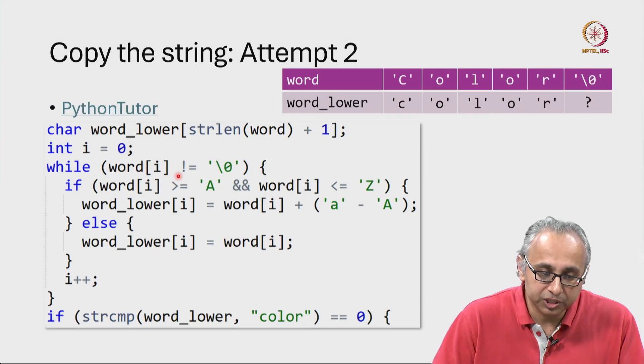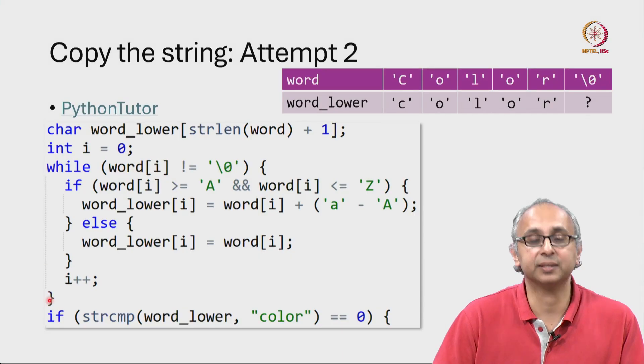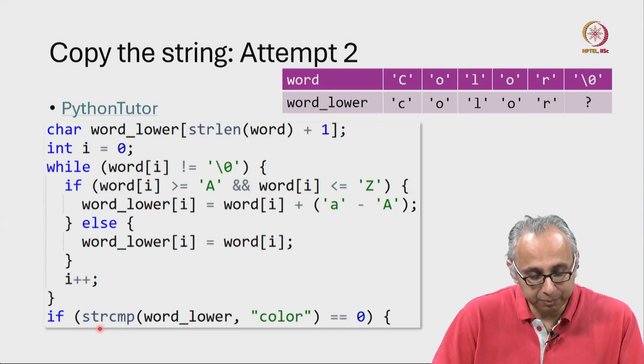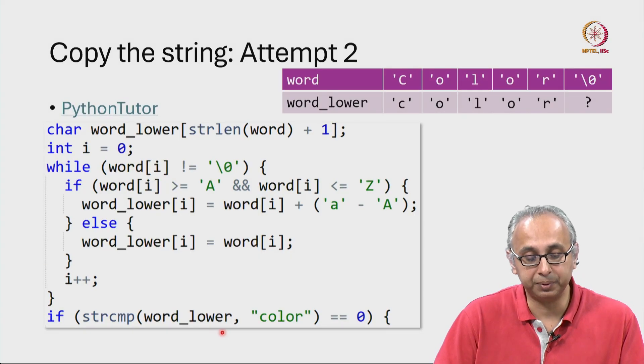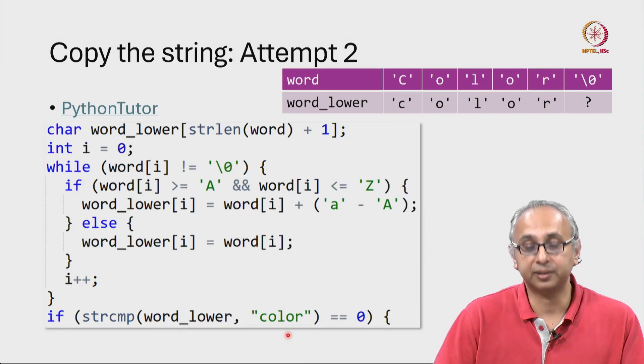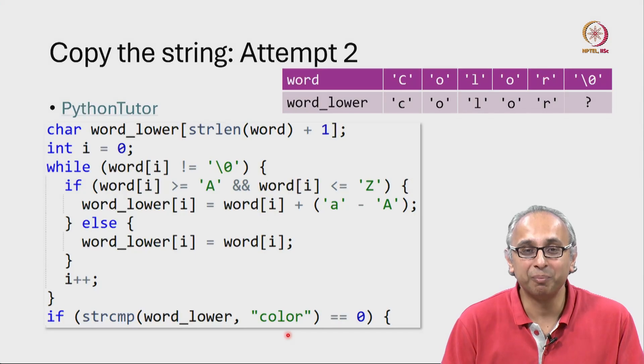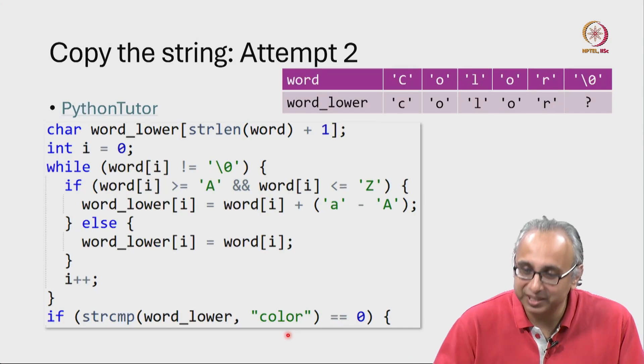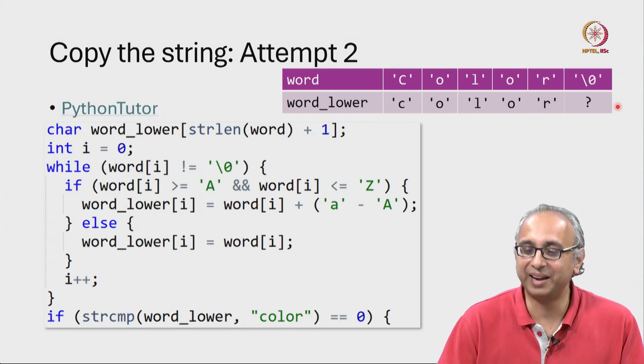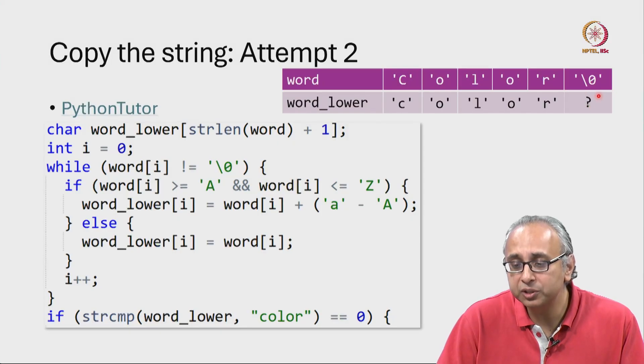So this loop will exit and then we will try and do strcmp with this array and color. Now can you see the problem? We didn't copy the null character. So what is over here?